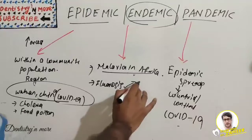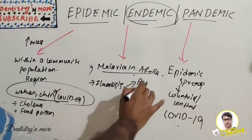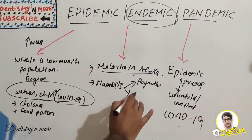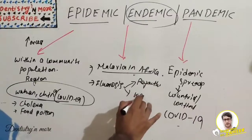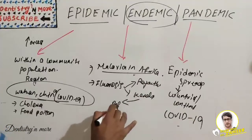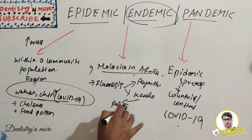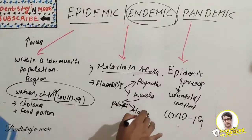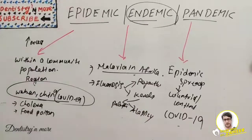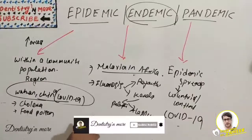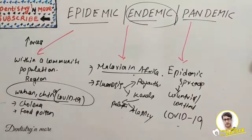Fluorosis is commonly seen in states such as Rajasthan, and in Kerala it is commonly reported in Palakkad and Alappuzha. It is a disease seen over a very long period of time in those regions — that long-term constant presence is what makes it endemic.